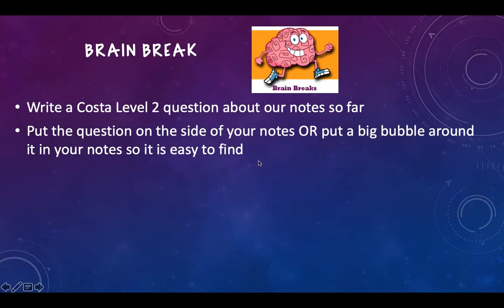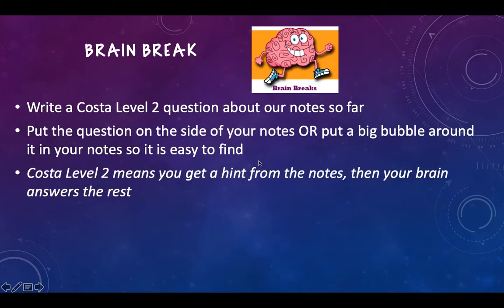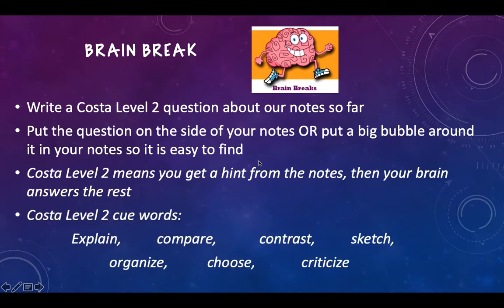So there are our first few different models. Go ahead and take a little break and do a level two question. A contrast would be a great one — contrast Aristotle's and Aristarchus's solar system models. Or sketch a picture of the Aristotle model. Some kind of level two sketch would be a great idea.